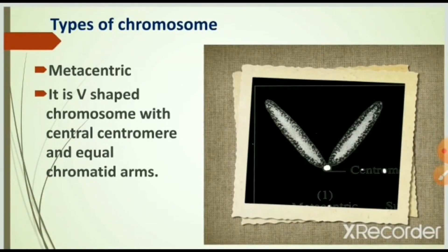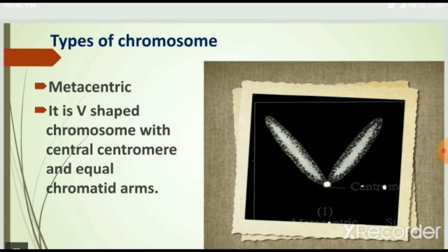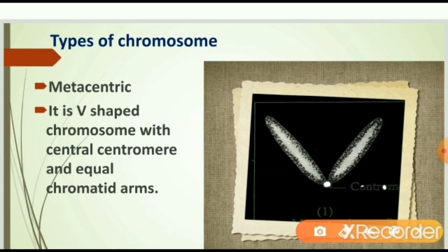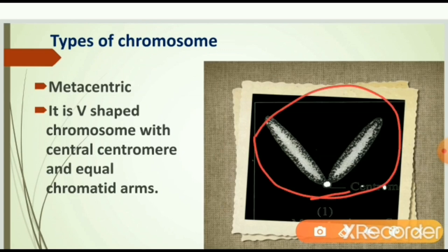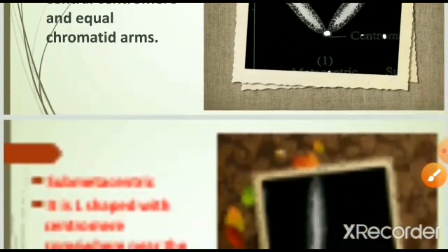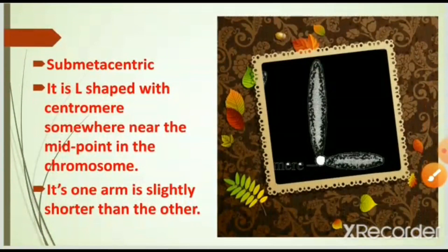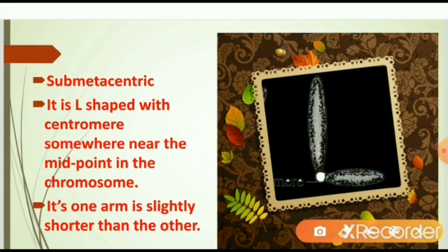The first type is metacentric: it is a V-shaped chromosome with a central centromere and equal chromatid arms. The second type is submetacentric: it is L-shaped with the centromere somewhere near the midpoint of the chromosome. Its one arm is slightly shorter than the other.